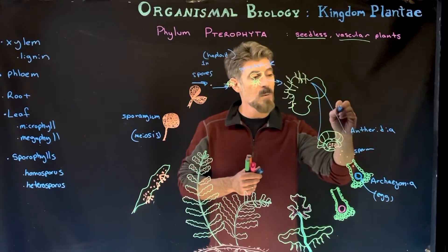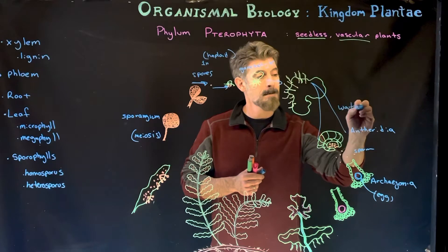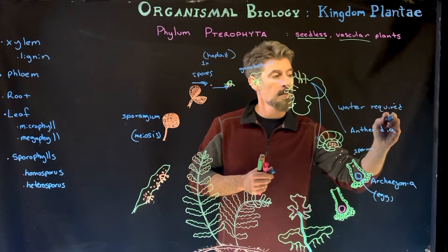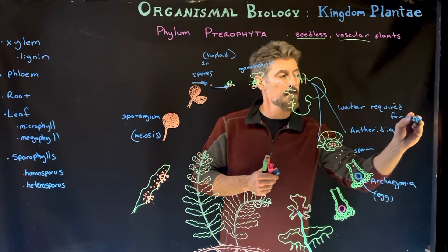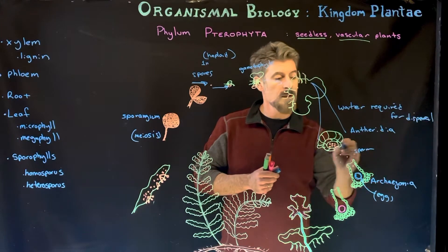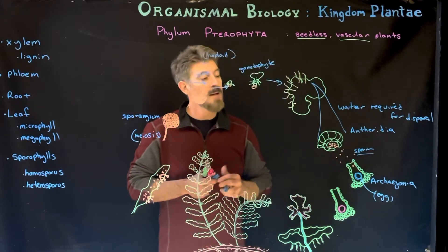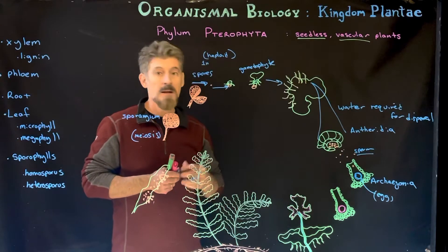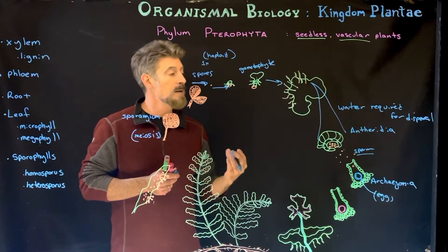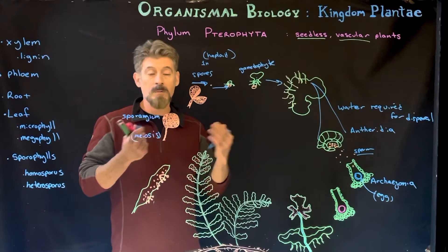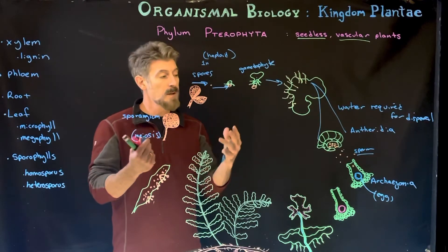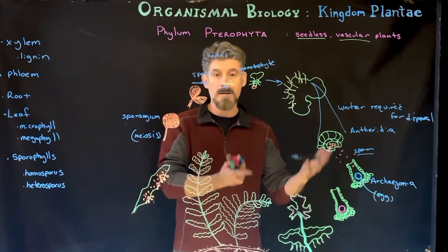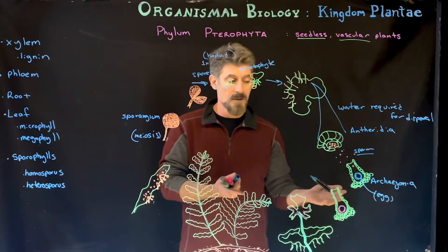The sperm from one moves through the water, so again water is required for dispersal. We have a swimming sperm with a flagella that swims in water, so you can only find pterophytes — the ferns — in wet environments. There has to be enough water so that when reproduction occurs, the sperm can be released and actually swim to find an archegonia, get inside, and fertilize the egg.